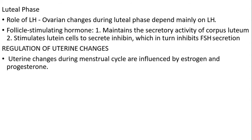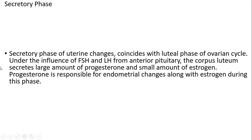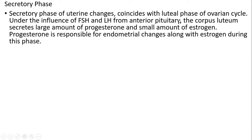Regulation of uterine changes: uterine changes during the menstrual cycle are influenced by estrogen and progesterone. During the proliferative phase, the repair of the damaged endometrium occurs mainly under the influence of estrogen. Estrogen stimulates proliferation of cells in the endometrial stroma, development of uterine glands, and appearance of blood vessels in the endometrial stroma. The secretory phase of uterine changes coincides with the luteal phase of the ovarian cycle, under the influence of FSH and LH from the anterior pituitary. The corpus luteum secretes a large amount of progesterone and a small amount of estrogen. Progesterone is responsible for endometrial changes along with estrogen during this phase.